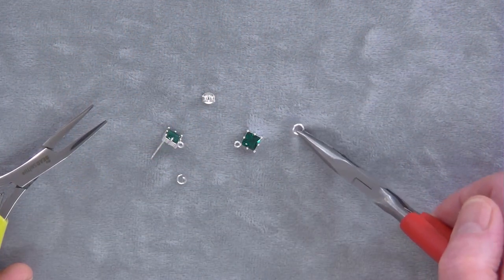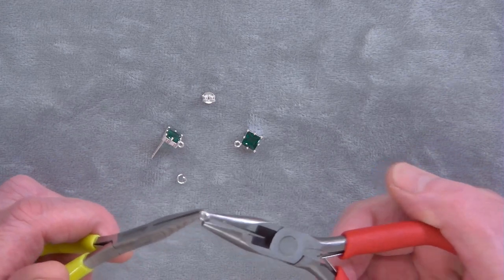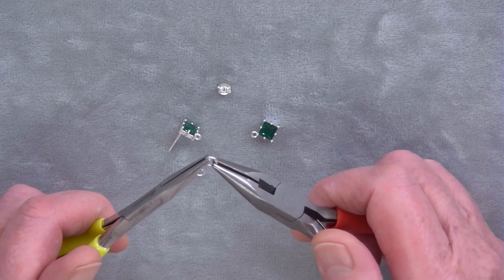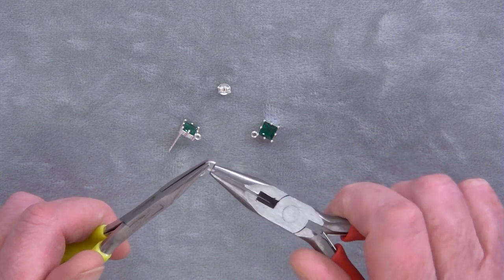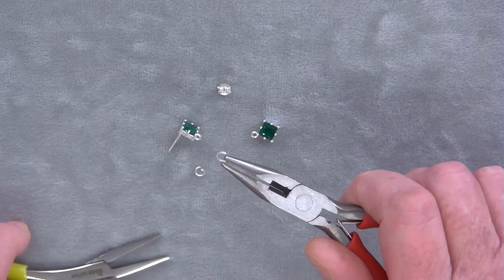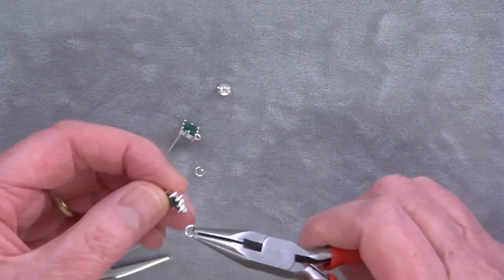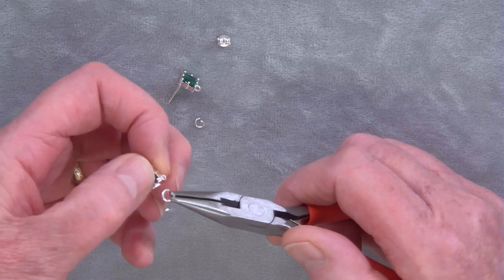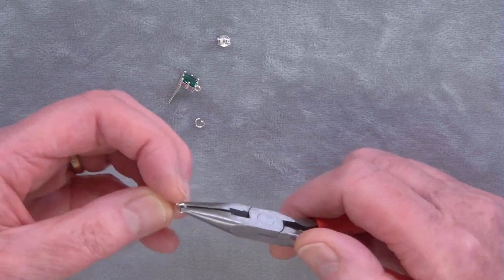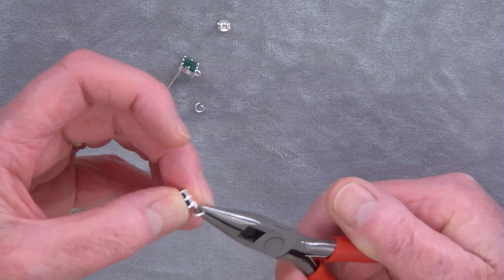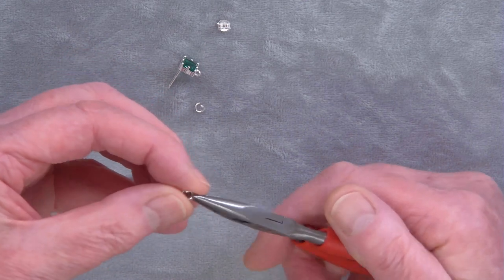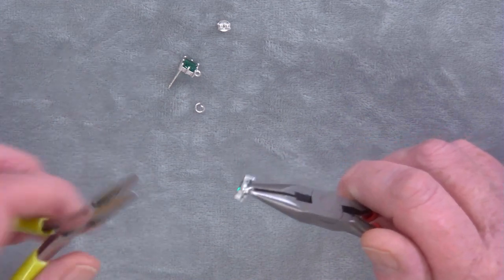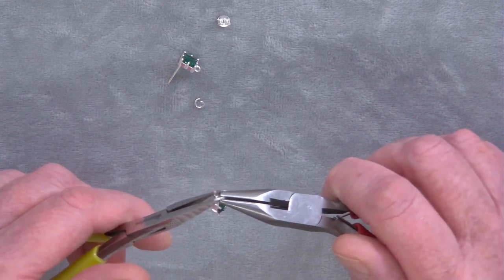So firstly you need to open your jump rings and you just pull one side of the jump ring towards you to open like a door, and then we'll attach that to our charm element and then close that jump ring up again.